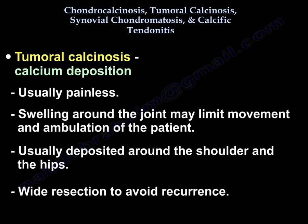Tumoral calcinosis is usually deposited around the shoulder and the hips. If it is painful and limits the patient's function and ambulation, you need to do wide resection to remove all of it and avoid recurrence.